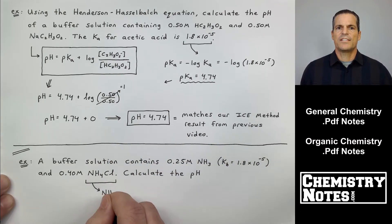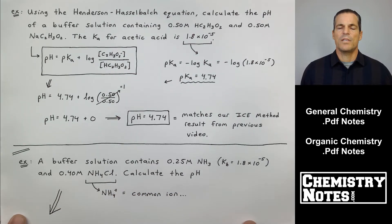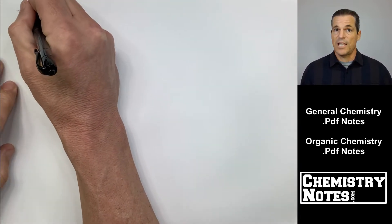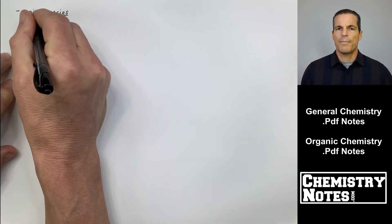Example: a buffer solution contains 0.25 molar ammonia, NH3. That's a weak base. Kb value equals 1.8 times 10 to the minus 5th. That's not a typo. The Kb is actually the same as the Ka for acetic acid. So let's list our major species.